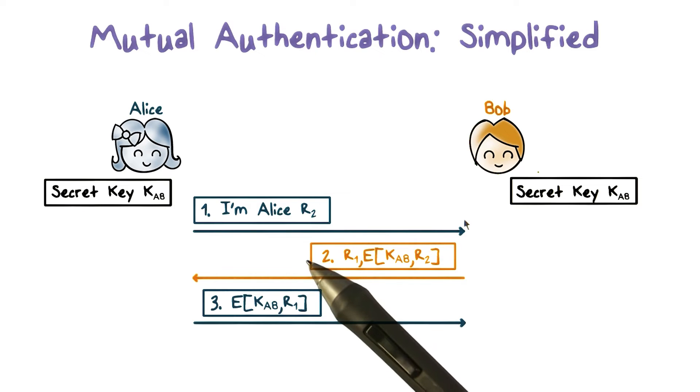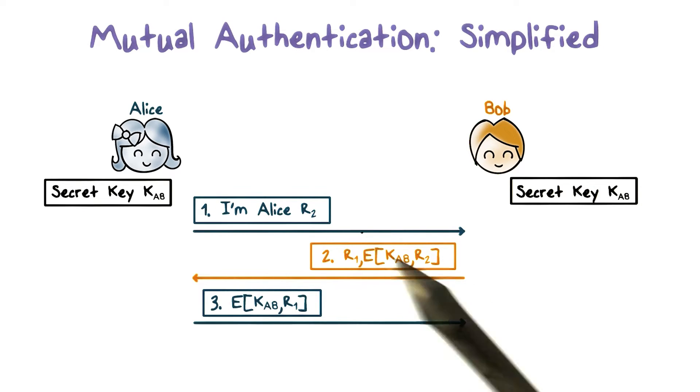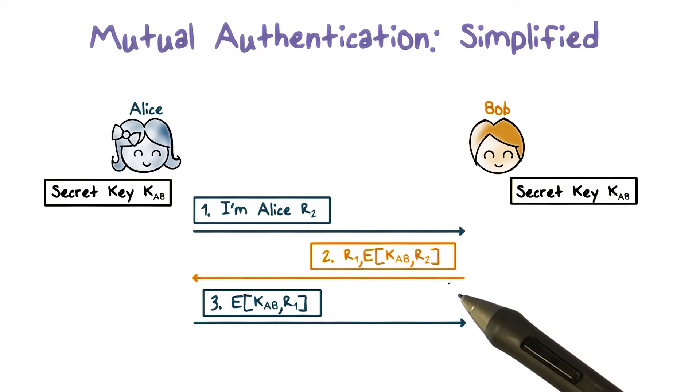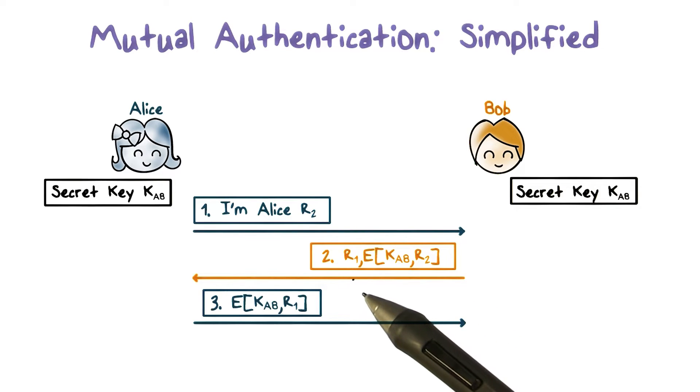It seems that the following would work. First, Alice says hi to Bob and sends along a challenge R2. Second, in response, Bob sends Alice decipher text of R2 and his own challenge R1.